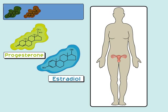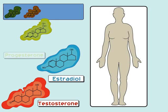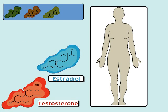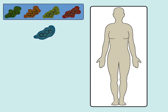Reproductive hormones, including the ovarian progestins and estrogens — especially progesterone and estradiol — and the testicular androgen testosterone, are all involved in the development and maintenance of primary and secondary reproductive tissues throughout the body.